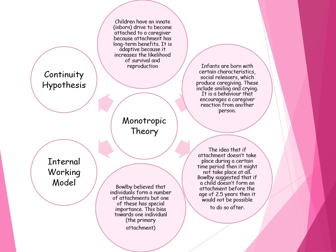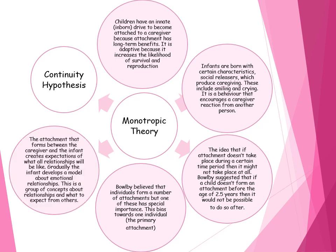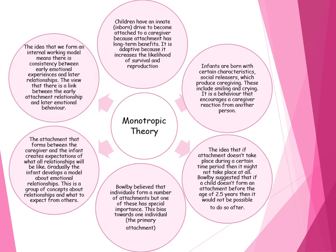The internal working model is a very important aspect - we need to be aware of this because the specification highlights it in particular. The attachment that forms between the caregiver and infant creates a framework and expectation for all future relationships, so it's like forming a blueprint of what you expect your adult relationships to be like in terms of romantic relationships and friendships. The infant develops this model gradually and it forms a group of concepts about relationships, what they expect from others, and how they are expected to behave. The continuity hypothesis is the idea that the internal working model is consistent, and the type of attachment we have as an infant is consistent in later life - so if you're securely attached as a child, you'll be securely attached as an adult.